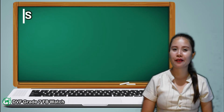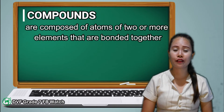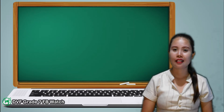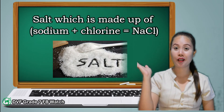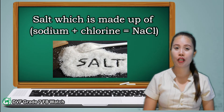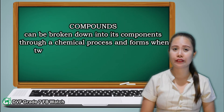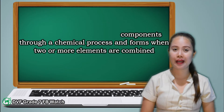Let's now proceed with compounds. Compounds are composed of atoms of two or more elements that are bonded together. An example is water, which is a combination of hydrogen and oxygen. Another is salt, which is made up of sodium and chlorine. Compounds can be broken down into their components through a chemical process and form when two or more elements are combined.